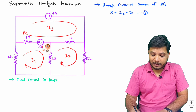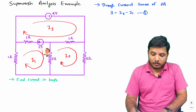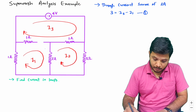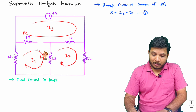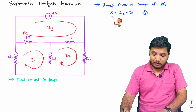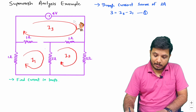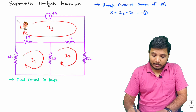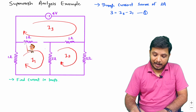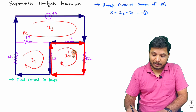Once we have identified the current source, we need to consider that current source as an open circuit. So now we will be considering this current source as open circuit. As we consider that source as three amperes, this circuit now has that open source. As this is open circuit, we'll be having this loop and through these two loops we'll be applying KVL. This one is the larger loop, referred to as the super mesh loop, and the other is our normal loop.